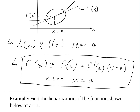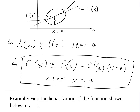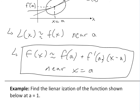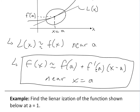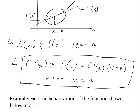L(x) is near f(x) and approximately equals f(x) near a. That's the whole idea, and you get the equation of a line: f(x) is approximately equal to f(a) plus the derivative f'(a) times x minus a. This is rise over run times the run, giving you the rise, and it's valid near a.